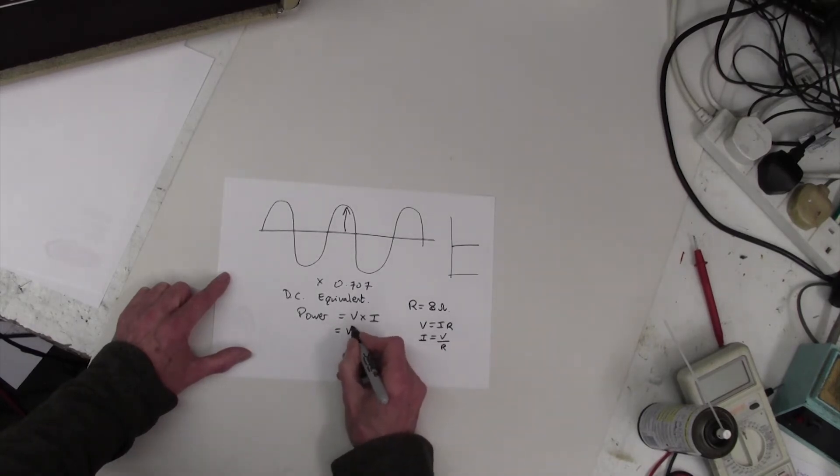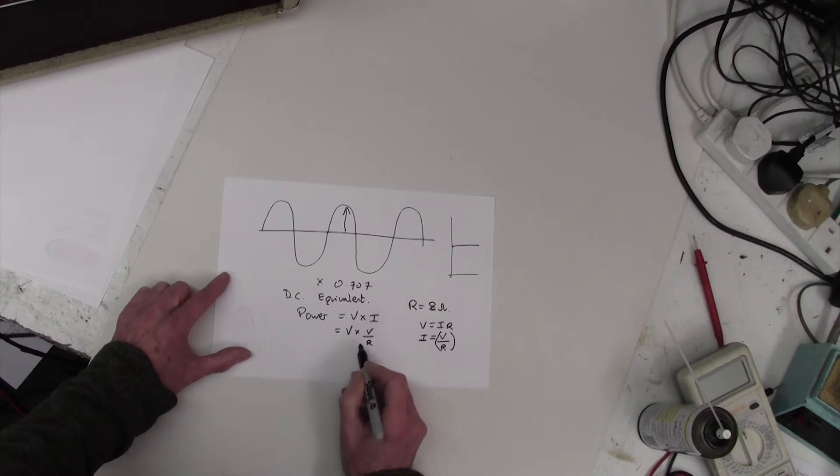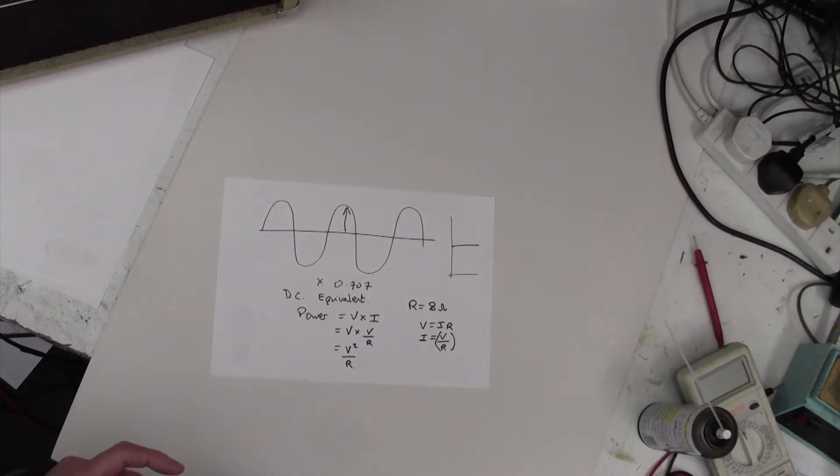So we can now substitute this I here for this I here and come up with our power equals volts times volts divided by resistance. So in other words I just took that there, which is I, and I put it in here to substitute for I. Well V times V is V squared, as you know, so we can rewrite this as V squared over R. OK, so now we're in business.